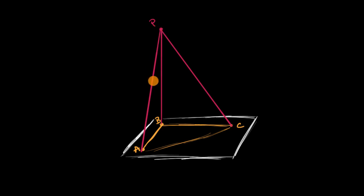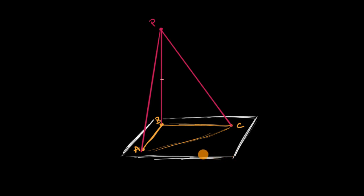Now if we were to go halfway along that height and take a cross-section of this pyramid that is parallel to the surface of our original desk, what would that look like? Well, it would look something like this.